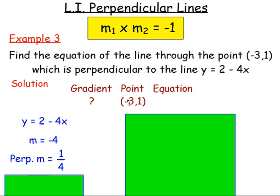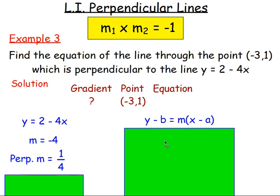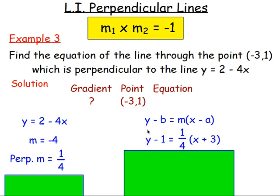Now: gradient, point, equation. We know the gradient is one quarter and the point is negative 3, 1. Use y minus b equals m bracket x minus a. Substituting in: y minus 1 equals one quarter bracket x minus negative 3. Take away a negative means you add, so it becomes x plus 3.